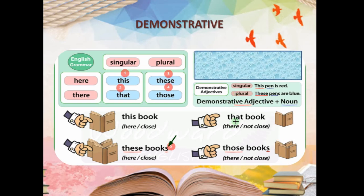'That' is also for singular, but the object is not close to you — it is far. 'That book' means one book that is far from you. 'Those books' — plural and far. Summary: 'this' and 'that' are for singular; 'these' and 'those' are for plural. 'This' and 'these' are for closer objects; 'that' and 'those' are for farther objects.